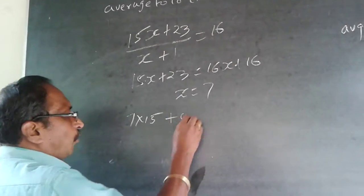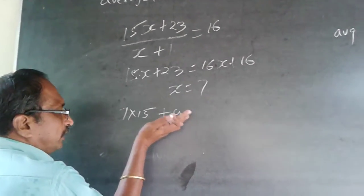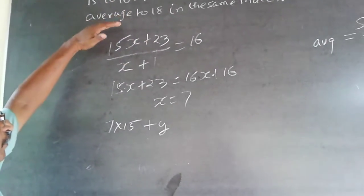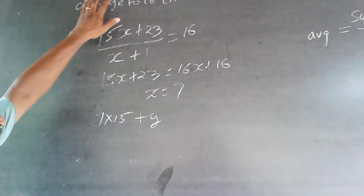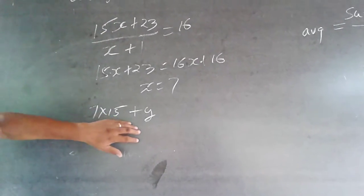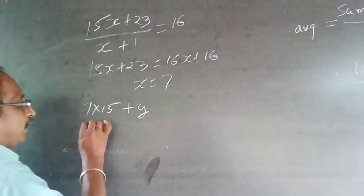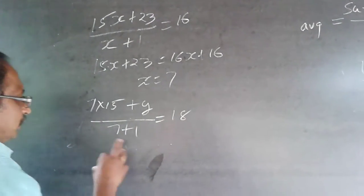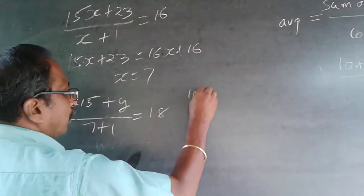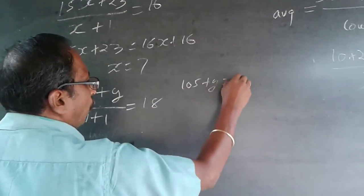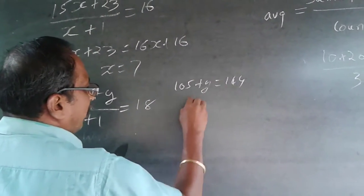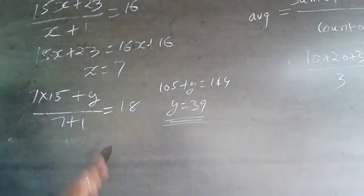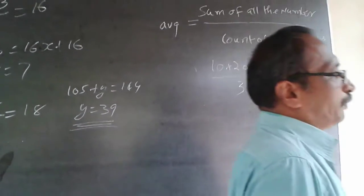Plus y, where y is the number of runs to be scored in the same match. They are not asking for additional runs — some students give additional runs, which is not required. So 7 times 15 plus y divided by 8 should equal 18. Solving: 105 plus y equals 144, so y equals 39. The answer is 39.